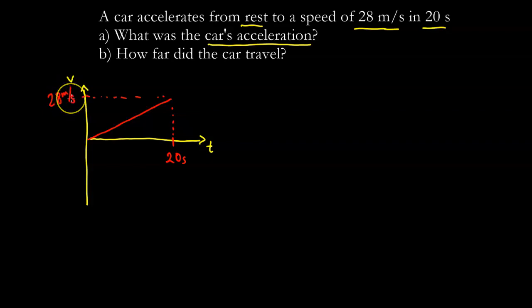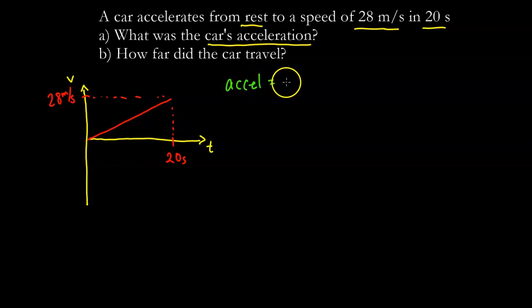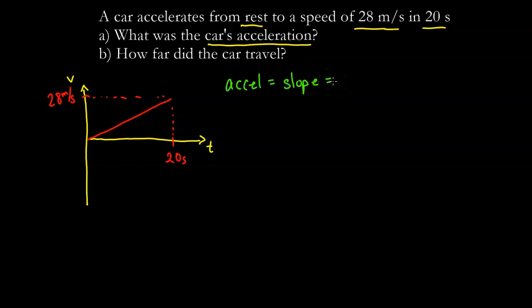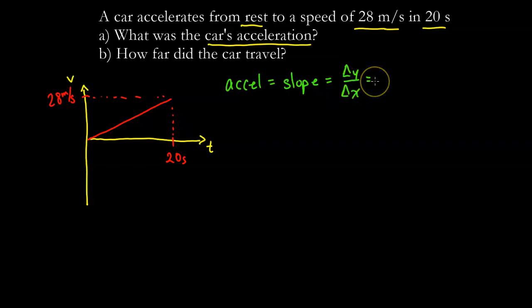To find the acceleration we need to remember that acceleration on a velocity graph is represented by the slope, and the slope is just the rise over run — or the change in y over the change in x.